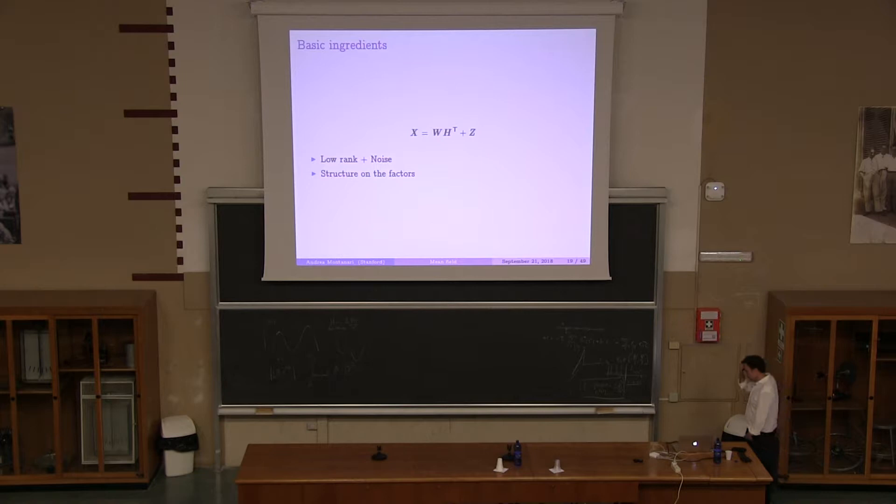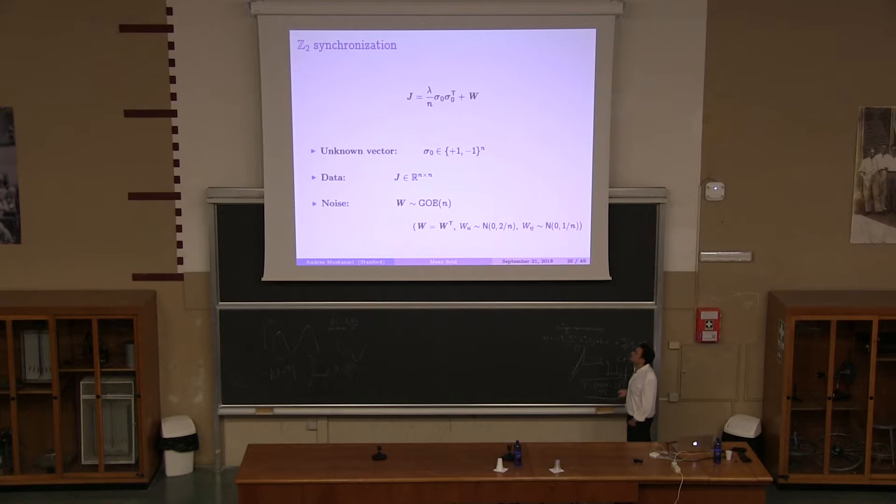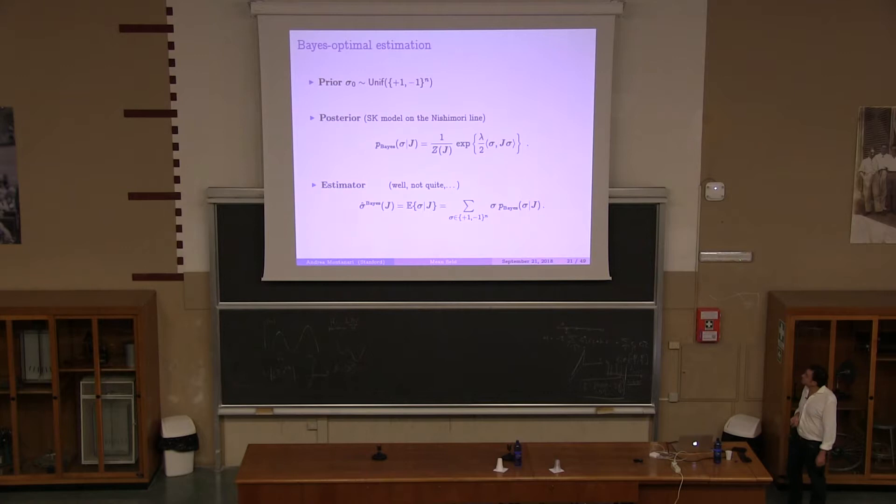Okay, so Bayesian method, in this case, gives you wrong confidence intervals. And the reason is basically that this mean field approximation is wrong. Okay, so what are the main ingredients of this model? Of course, there is a low-rank structure, and there is noise. But the low-rank components have some additional structure, some additional prior. Okay, so what is the simplest model that has these properties? Of course, it's a spin-glass model. So we call this Z2 synchronization, because it also appears in a different literature in signal processing. But it's the following. You have a vector, sigma-0, that is a plus-minus-1 vector, and it's unknown. And you observe sigma-0, sigma-0 transpose times a coefficient plus noise. And noise is your nice GOE matrix.